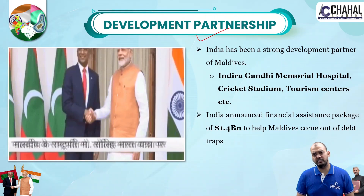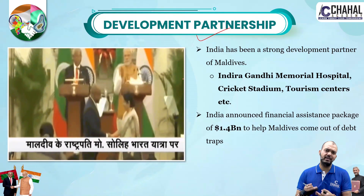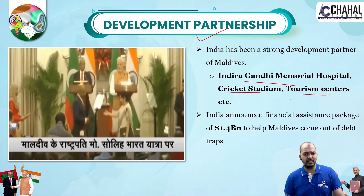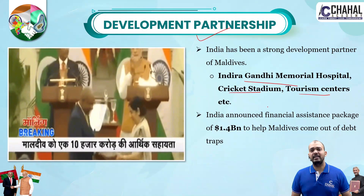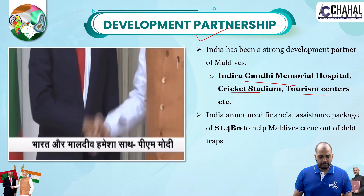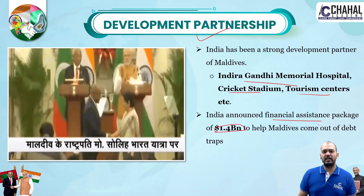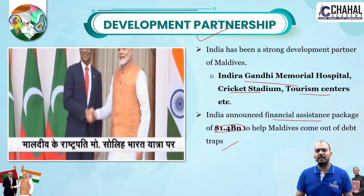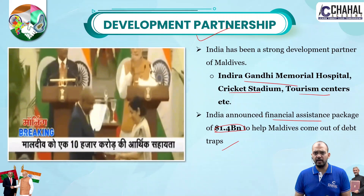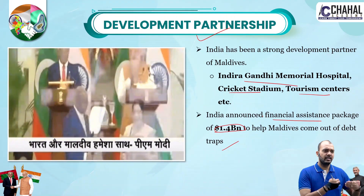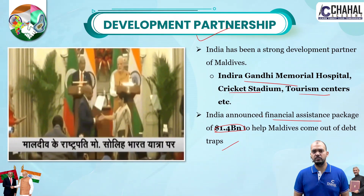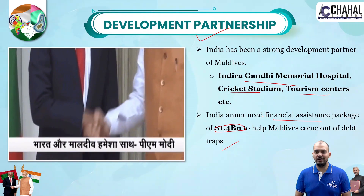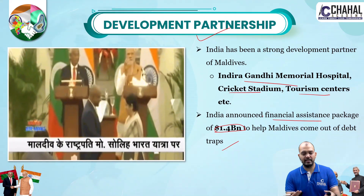India has always been proactive in providing development assistance to neighborhood countries, whether through the Gujral Doctrine or the Neighborhood First policy. Maldives has benefited greatly — India built the Indira Gandhi Memorial Hospital, a Cricket Stadium, a Tourism Centre, and the National Police Academy in Maldives. We also talk about the Greater Male Connectivity Project. Additionally, India provided financial assistance to help Maldives come out of Chinese debt trap, similar to Sri Lanka's situation, where former President Abdullah Yameen's pro-China stance had led to heavy Chinese debt.